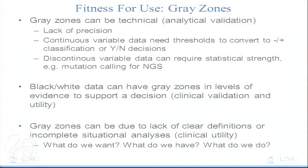One aspect of fitness for use is: how big is the gray zone in an assay result? Gray zones can be technical — lack of precision. If the data involves continuous variables, where's the threshold, where's the cutoff? Even with discontinuous data like mutation calling — is it an A or is it a G? — it seems like it should be easy, but this requires multiple reads to generate statistical strength to say yes. Even seemingly black-and-white data like a mutation can still have gray zones in the levels of evidence to support a decision. Gray zones can also be due to lack of clear definitions or incomplete situational analyses — what do we want, what do we have, what do we do?